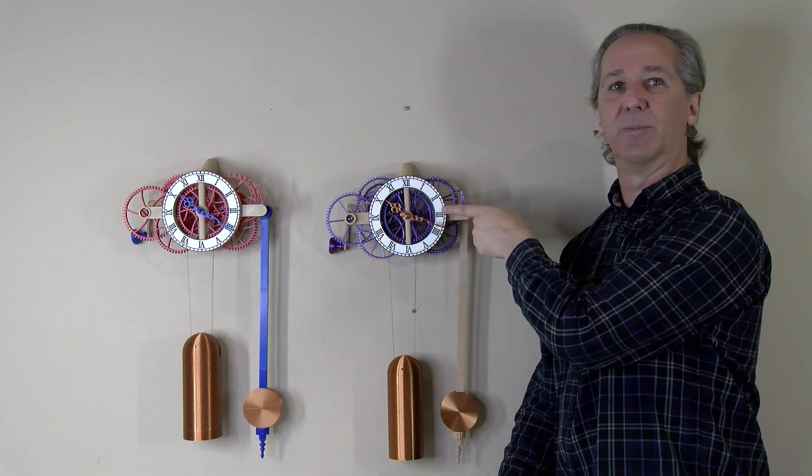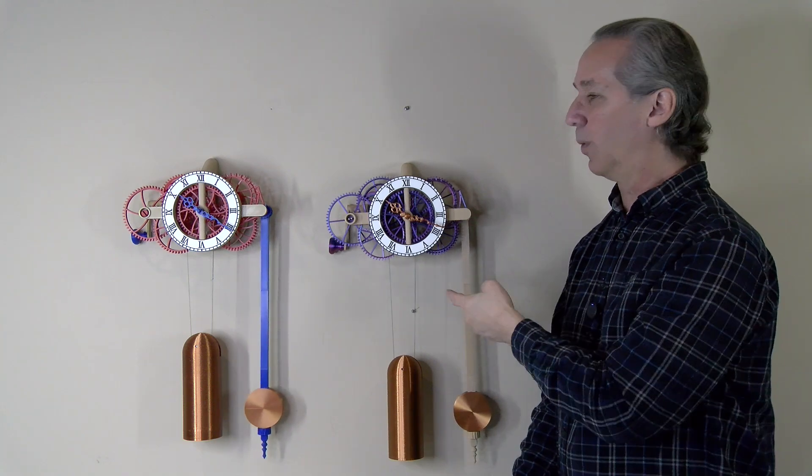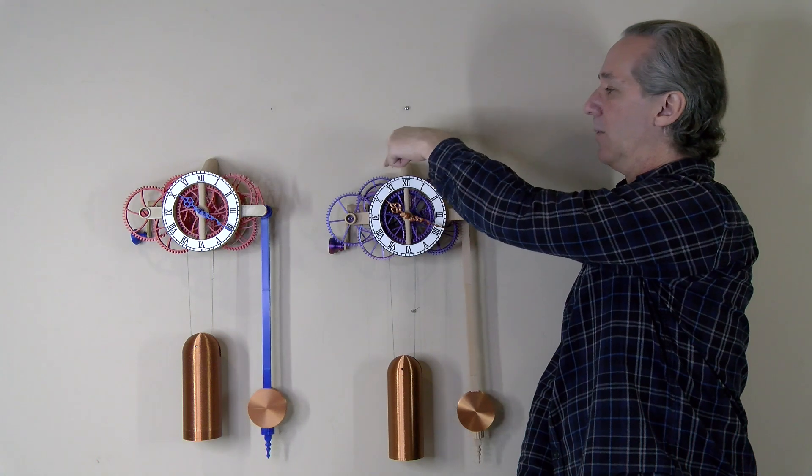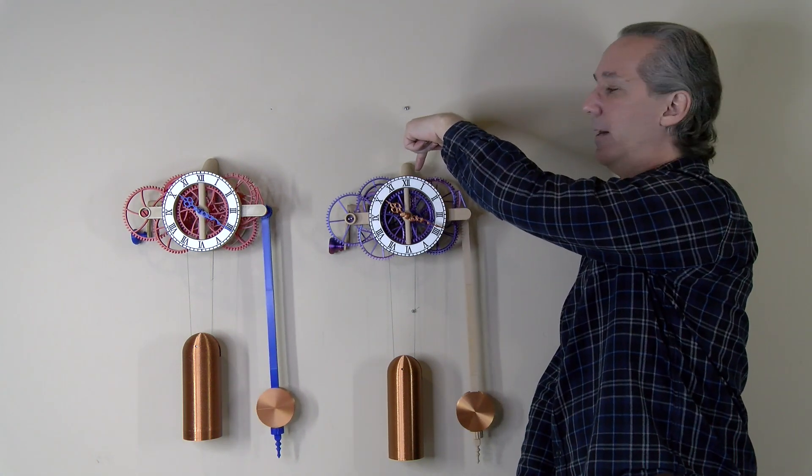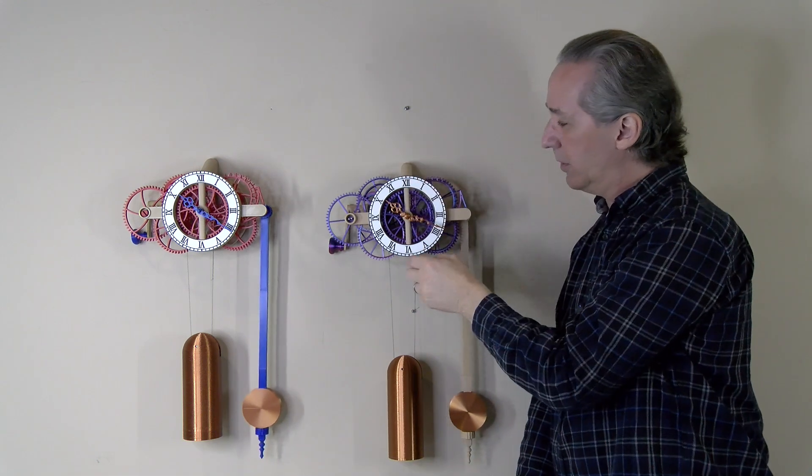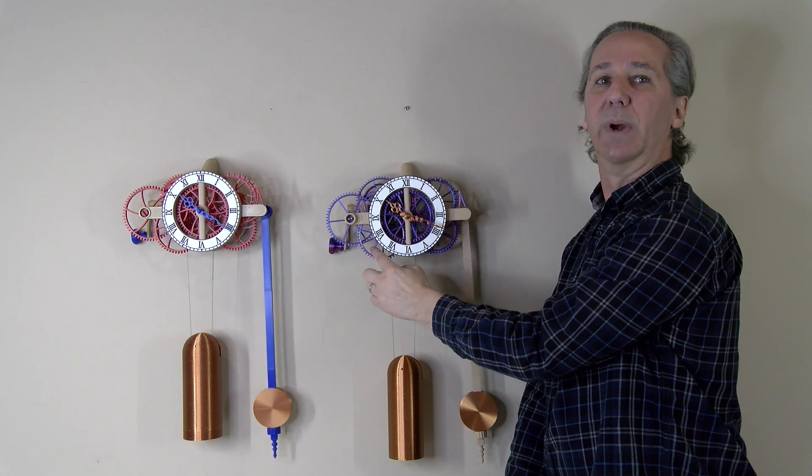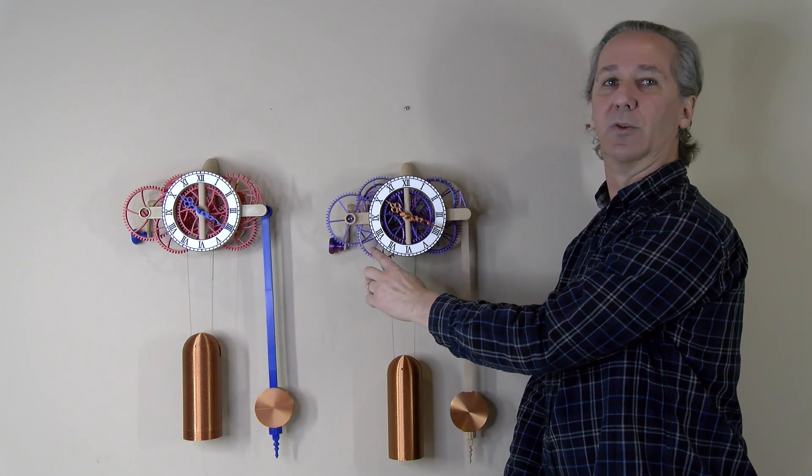The runtime options on this clock are 8, 11, 15, 20, or 32 days, and those are accomplished by changing the gear ratios between the ratchet and gear 4, which is back here. The 32-day option requires a smaller barrel on the winding drum. Other than that, it's identical to the 20-day mode.